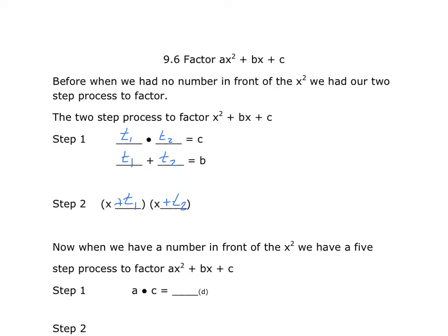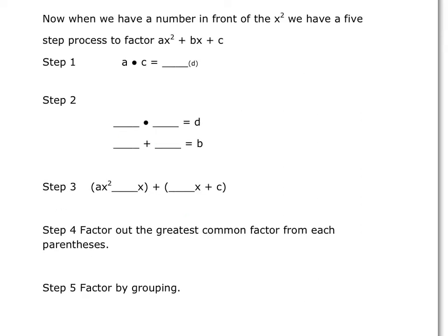The five-step process is going to be similar, but we have to add extra steps because — as you'll notice at the top of the notes — it's no longer just X squared; it's AX squared, and then BX plus C is the same. The key thing here is there's now a number in front of X squared, so our leading coefficient in the five-step process is no longer 1. When your leading coefficient is 1, you can go back to the two-step method. In this process, we're going to take A times C to get a new term, and we'll call it D.